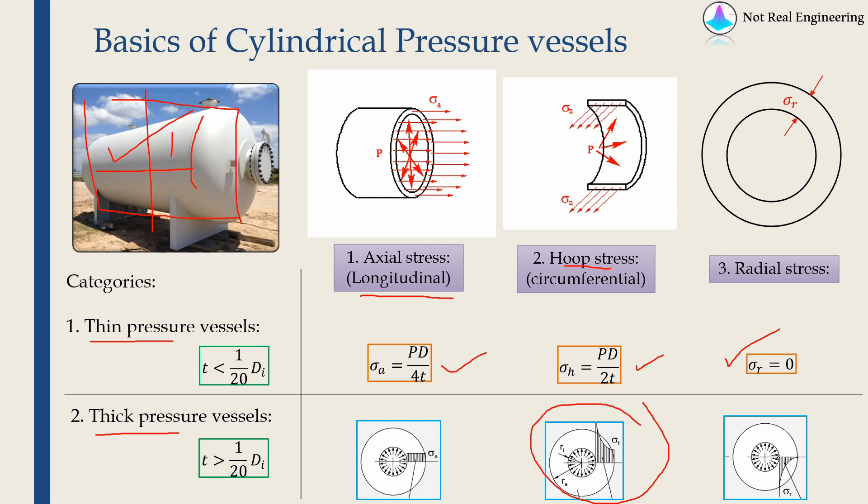Similarly for radial stress, the radial stress is maximum at the innermost point and it becomes zero at the outermost point. And you can see it is in the negative direction, which means it is compressive in nature. And axial stress is constant throughout the thickness.